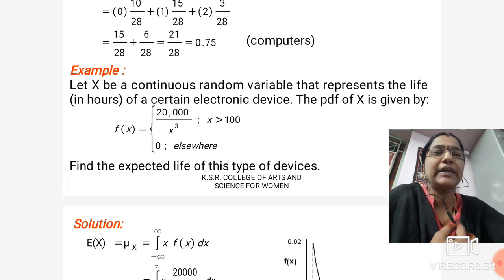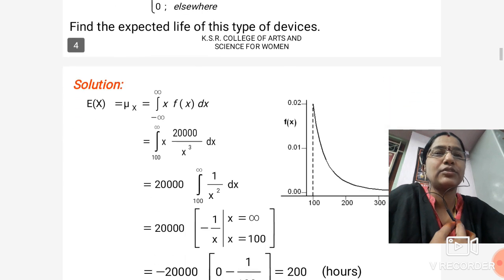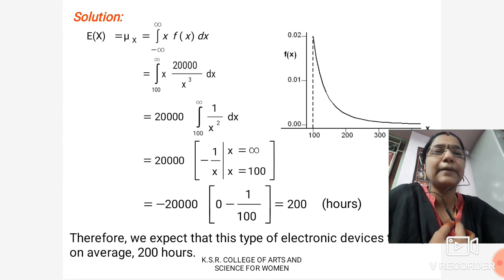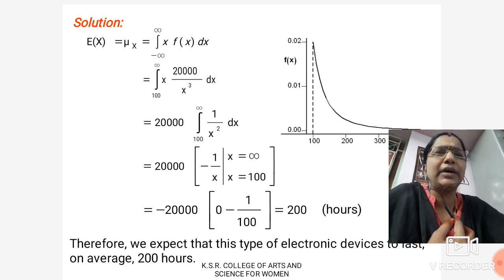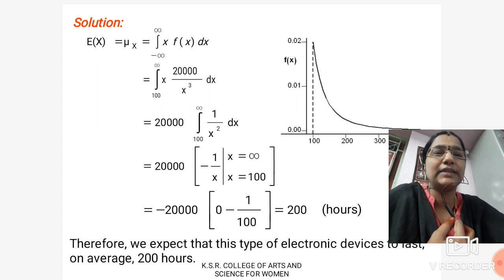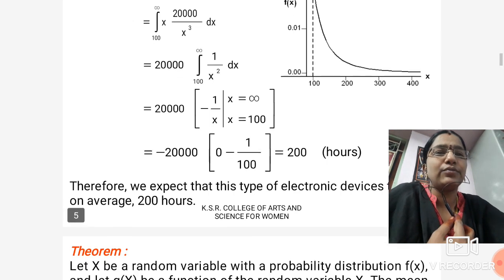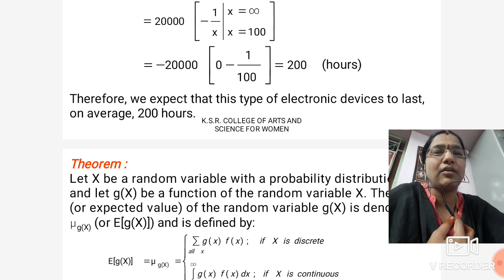Second example: Let x be a continuous random variable that represents the life in hours of a certain electronic device. The pdf of x is given by f(x) = 20,000/x³ for x > 100, and 0 elsewhere. Find the expected life of this type of device. Solution: E(x) = μx = ∫ from −∞ to ∞ x·f(x) dx. Substituting f(x) = 20,000/x³, we integrate from 100 to ∞ of x · (20,000/x³) dx. Finally, the solution is 200 hours. Therefore, we expect this type of electronic device to last on average 200 hours.